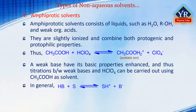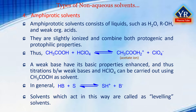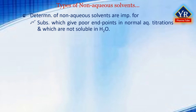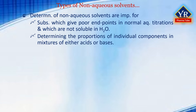In general, strongly protophilic solvents lead to the equilibrium being forced to the right-hand side. This effect is so powerful that in such solvents, all acids act as if they were of similar strength. The converse of this occurs with strongly protogenic solvents, which cause all bases to act as if they were of similar strength. Solvents which act in this way are known as leveling solvents. Non-aqueous titrations are of importance for substances which may give poor endpoints in normal aqueous titrations, for substances which are not soluble in water, and these differential titrations are carried out in solvents which do not exert a leveling effect.